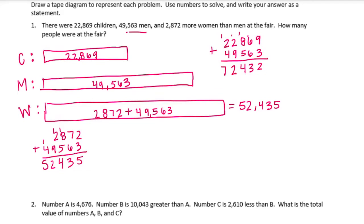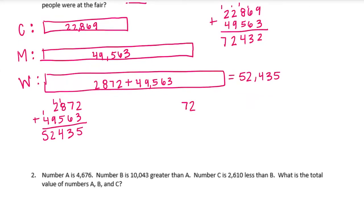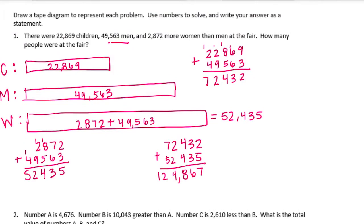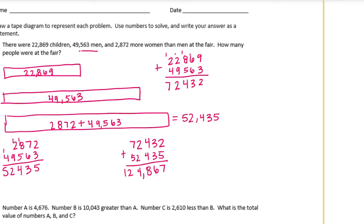Now we just need to add the women to that. So let's do 72,432 plus 52,435. 2 plus 5 is 7. 3 plus 3 is 6. 4 plus 4 is 8, 2 plus 2 is 4, and 7 plus 5 is 12. So we get 124,867 total men, women, children. So we would say in our statement, there were 124,867 people at the fair.